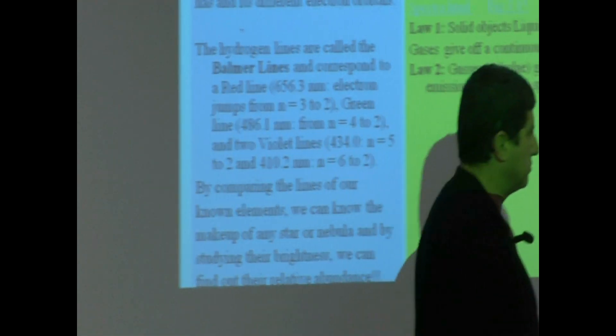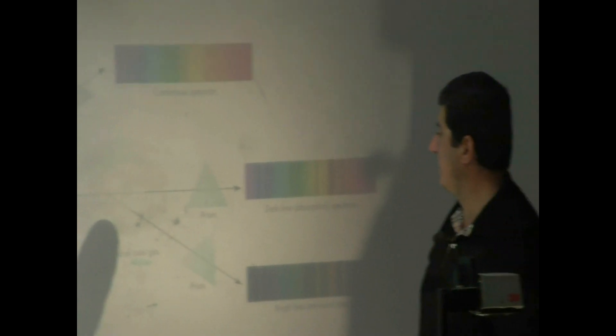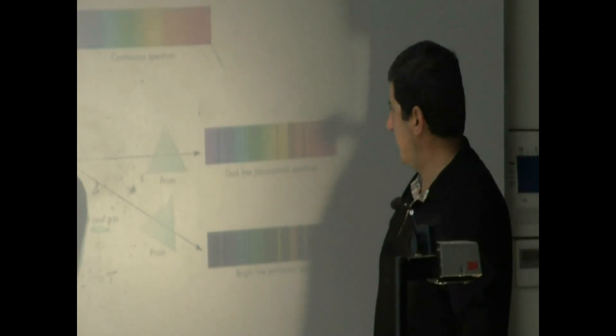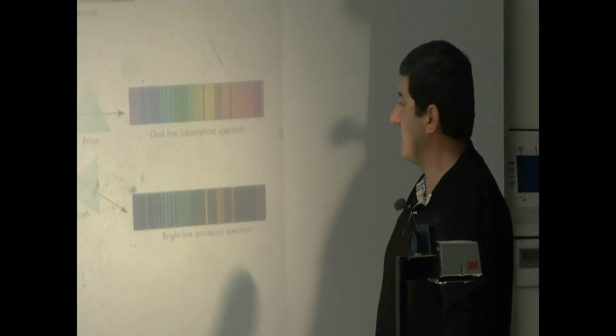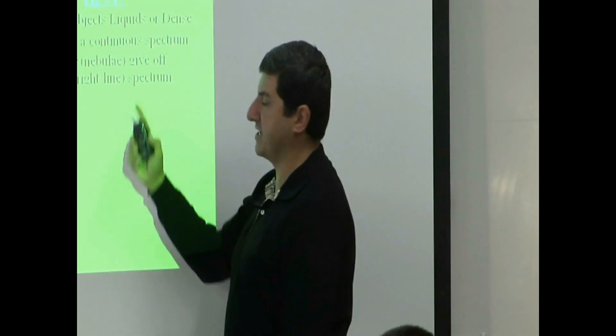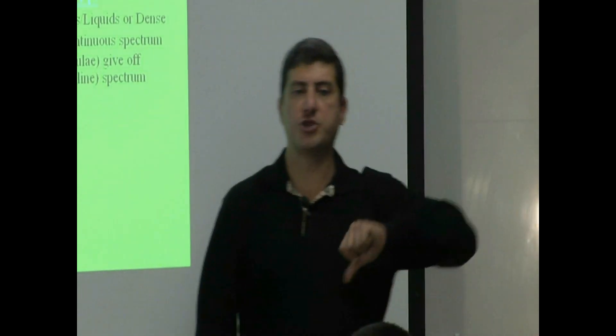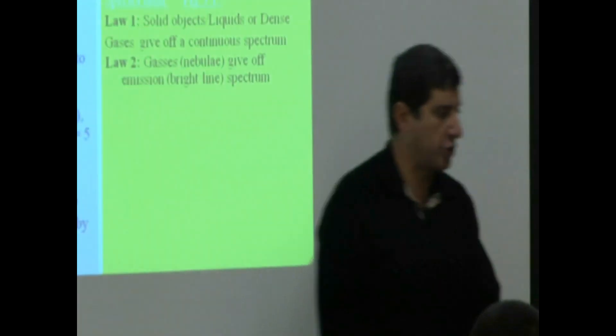Law number two. Thin clouds of gases, thin cloud of gas in the sky also known as a nebula, if you look at the light through that, you notice bright line emission spectra. Gases or nebula give off emission spectra or bright line spectra. The lines that I was just showing you back in here, when we were studying this topic, I showed you this one.